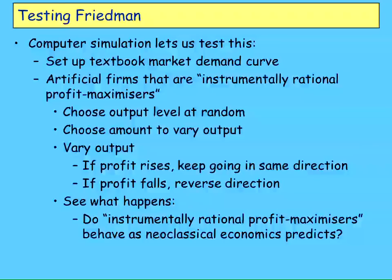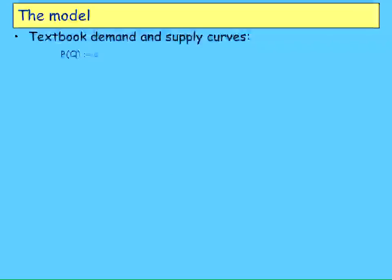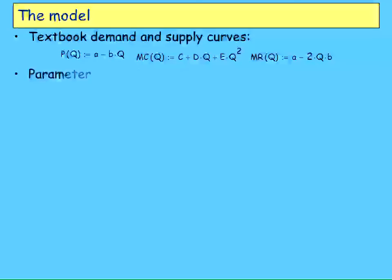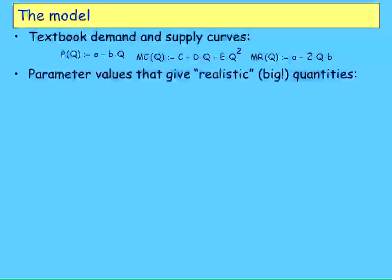The question is: do they behave as Milton says? Do they end up setting marginal cost equal to marginal revenue? Here's the model. I start with a textbook supply and demand curve — price being a downward-sloping linear function of market quantity, and marginal cost rising quadratically, giving a parabola. Marginal revenue is easy to calculate from the demand curve. I use big parameter values because I get very annoyed at textbook examples with tiny quantities.